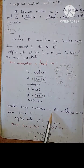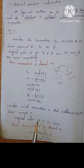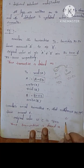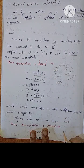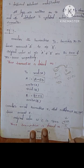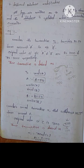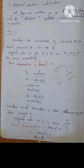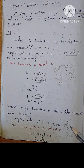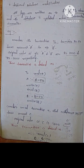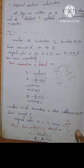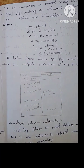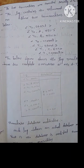Consider the second transaction T1 that withdraws 100 rupees from account C. The original value of account C is 700. We subtract 100 and write C.